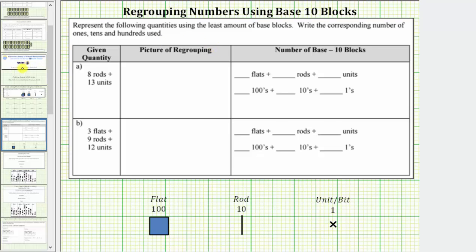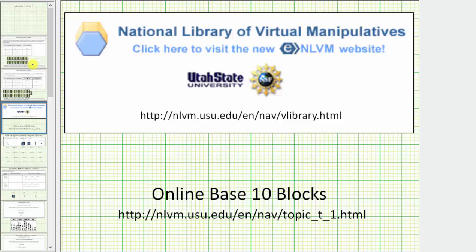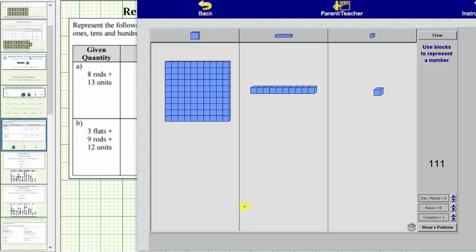To answer these questions, we'll be using the online base 10 blocks from the National Library of Virtual Manipulatives. For a quick review of the base 10 blocks, beginning on the right, we have a unit which equals one.